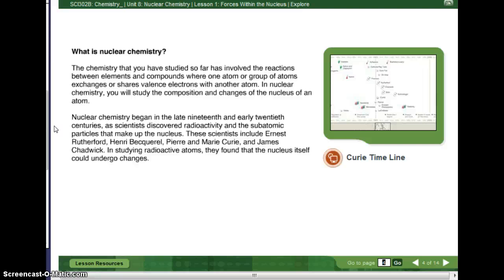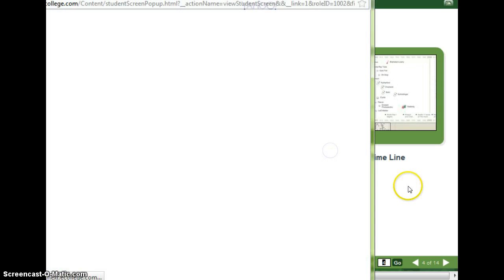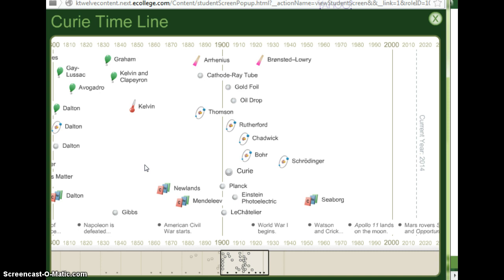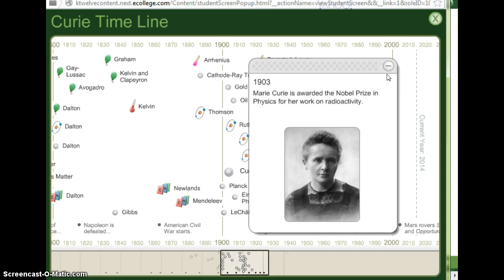In studying radioactive atoms, they found that the nucleus itself could undergo change. And so, Madame Curie is probably a person that you have heard of before. And Chadwick and Rutherford also helped with the nucleus. And just kind of gives you the timeline of when these things were going on. And of course, Madame Curie got a Nobel Prize for her work.